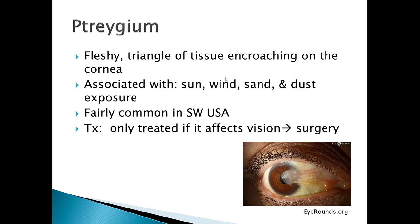A pterygium is a fairly common benign condition. You can see it just by observing the eye without any special equipment. When you look at the eye, you'll see a fleshy triangle of tissue encroaching on the cornea — think of a pterodactyl wing. You'll see increased incidence in people who have sun, wind, sand, and dust exposure, such as people who live in the southwest United States.